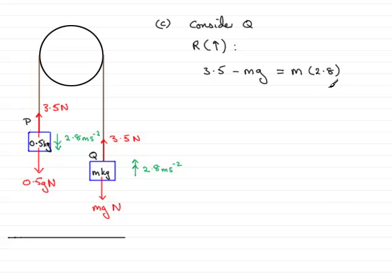So what I need to do now is just rearrange this. So I'm going to add mg to both sides. Therefore we would have 3.5 equals 2.8m plus mg. Now taking g to be 9.8, we've got 2.8m plus 9.8m and that's going to come to 12.6m, so we've got therefore 3.5 equals 12.6m.